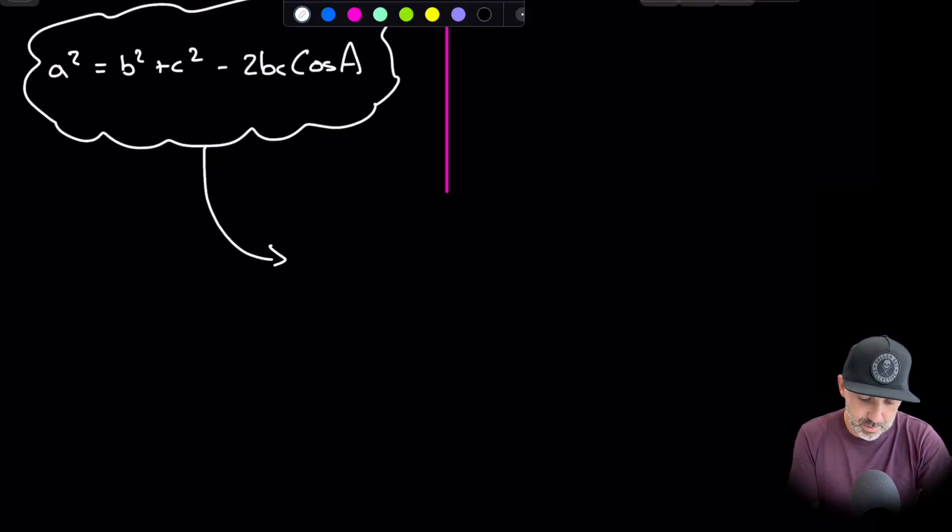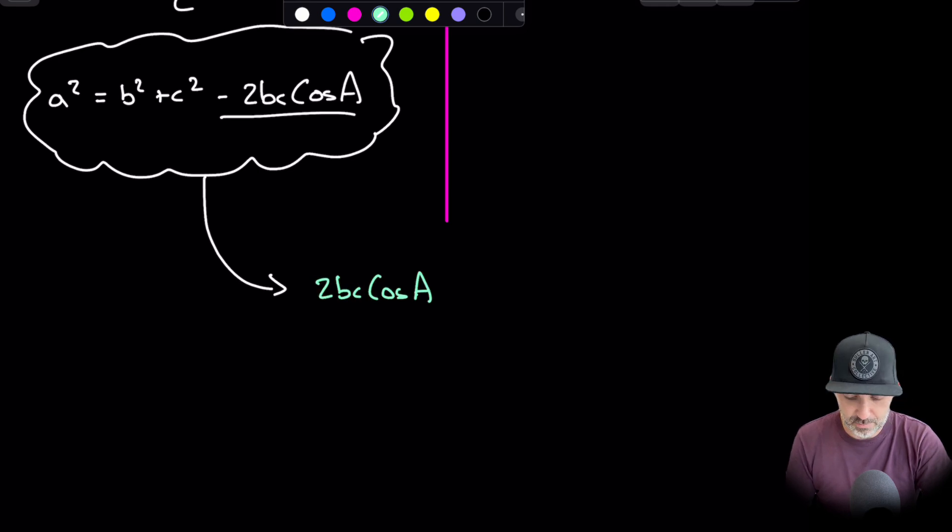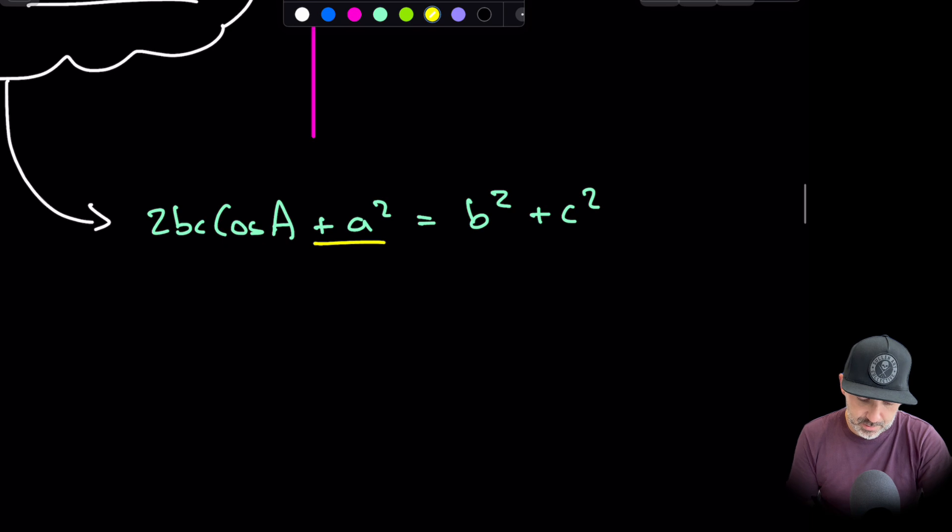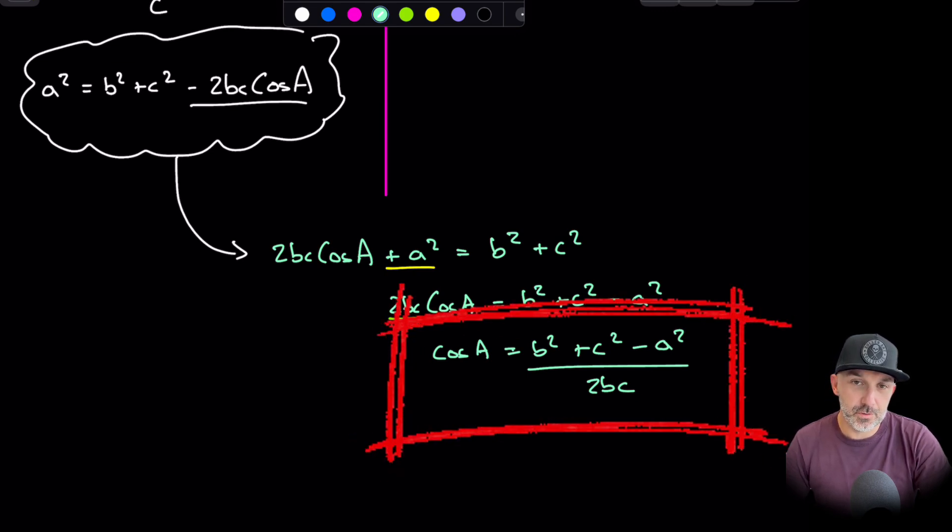What I'm going to do first of all is sum 2bc cos A to both sides. So I will have 2bc cos A + a² = b² + c². Now I'm going to subtract that a² from this side. The next line would read 2bc cos A = b² + c² - a². And then the final step would be to divide through by that 2bc on the left and 2bc on the right. Everything on the right-hand side is divided by 2bc.